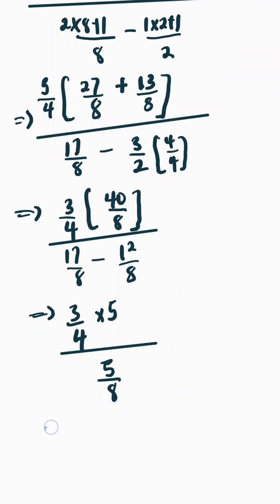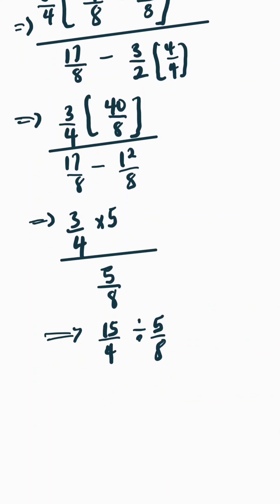Now solving further from here, we have 3 times 5 which is 15 over 4 divided by 5 over 8. Remember the rule of fraction that says 15 over 4, if the division is turning to multiplication, then you're going to find the reciprocal of the right hand side.